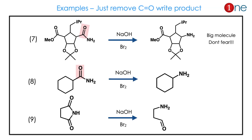The seventh example — don't be intimidated by the bigger molecule. Bigger molecules behave the same: CO removal gives the final product. The eighth is a simple amide-to-amine conversion. The ninth is interesting because it is a cyclic anhydride, which converts into an amide.